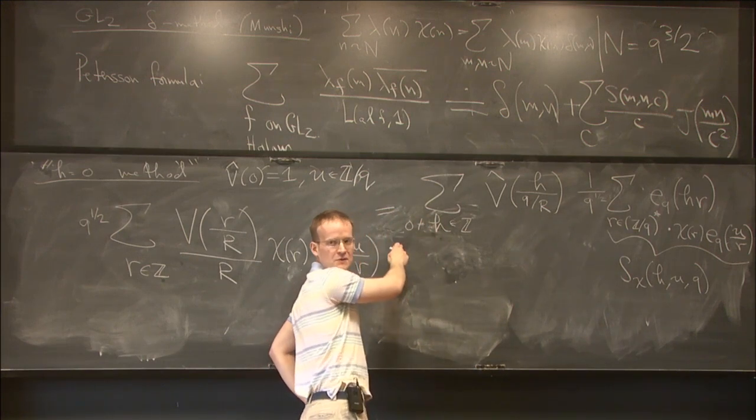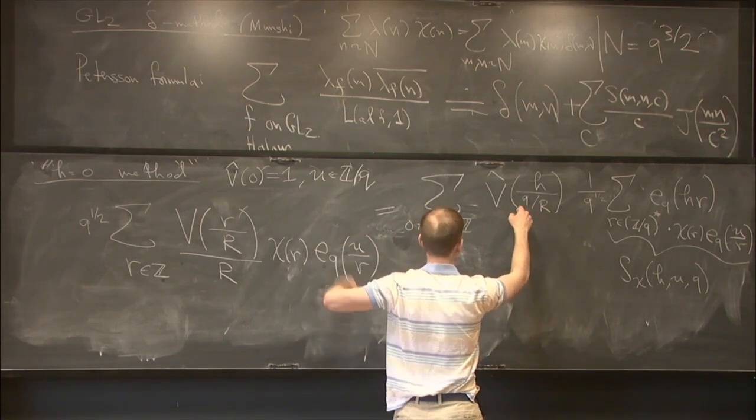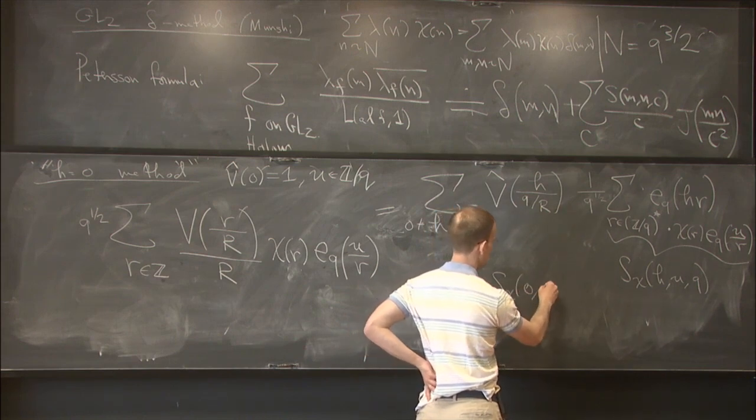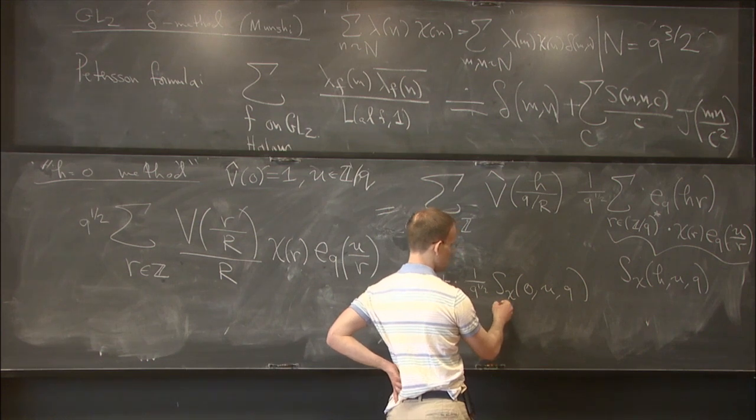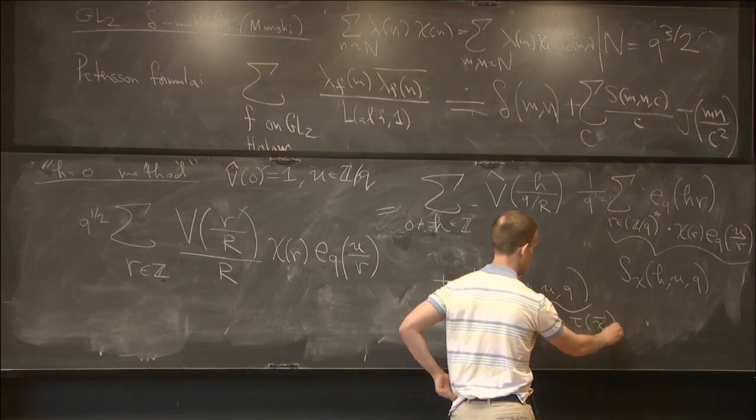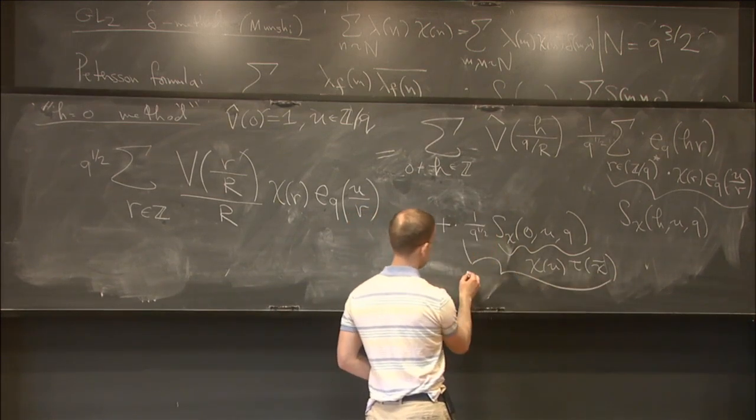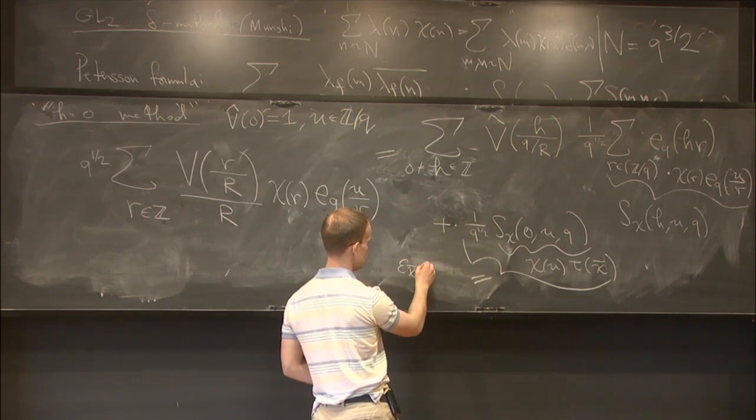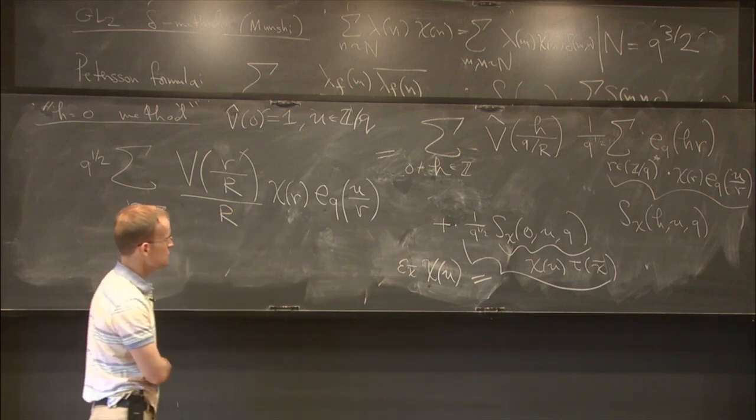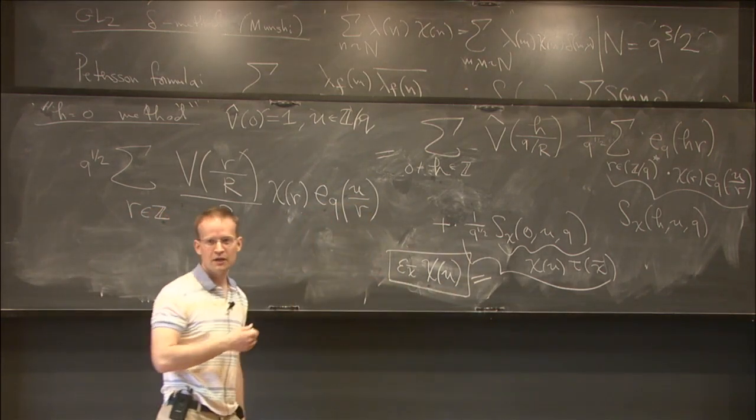We're going to split off the contribution from H equal to zero on the right-hand side. That'll give us an additional term of V hat of zero, which we normalized to be one, plus one over Q to the half, S chi of zero U and Q. You can convince yourself pretty easily that this is just a Gauss sum multiplied by chi of U. Denoting by epsilon chi bar the normalized Gauss sum of size one, we'll just get chi of U up to something understandable from the H equals zero contribution. Naturally we can view this as a formula for the character chi. I have no understanding of how one could have discovered that something like this would be useful. If anyone has a suggestion, that would be very welcome.